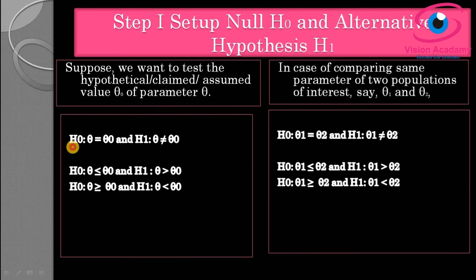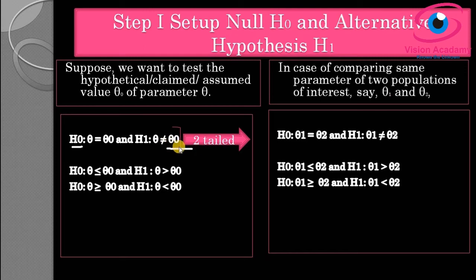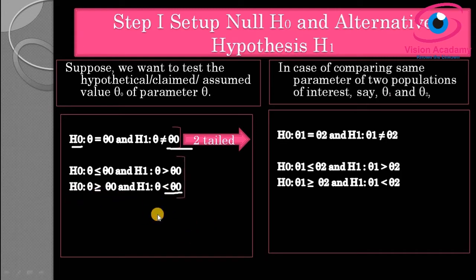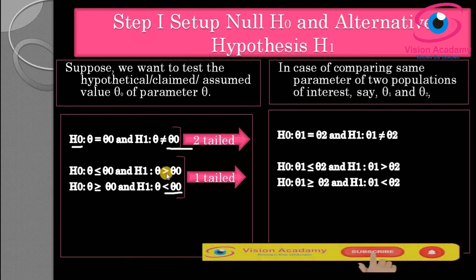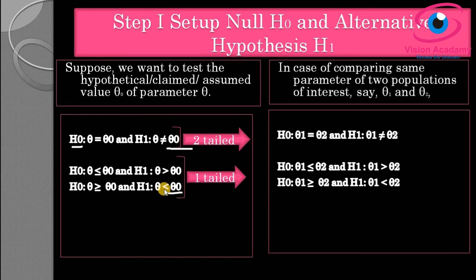For the null hypothesis: theta equals theta-null, and for the alternative hypothesis: theta not equal to theta-null. This is for a two-tail test, because the alternative hypothesis is of the 'not equal' type. Another possibility is: null hypothesis theta less than or equal to theta-null, and alternative hypothesis theta greater than theta-null — this is a right-tailed one-tail test. The third possibility has the null hypothesis theta greater than or equal to theta-null, and alternative hypothesis theta less than theta-null — a left-tailed one-tail test.